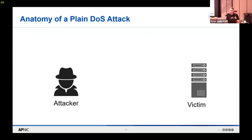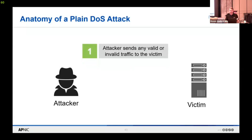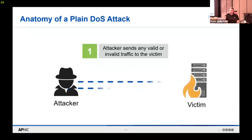Now we're going to go through and do some graphical representations of what a different type of DDoS attack looks like. A plain denial of service attack has only one attacker targeting one victim — the attacker sends either valid or invalid traffic to overwhelm their resources. As mentioned before, if the attacker has more resources than the victim, you don't need fancy botnets.